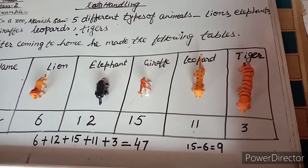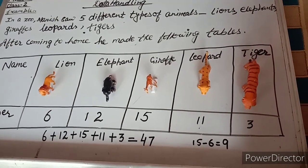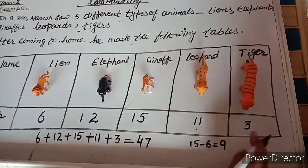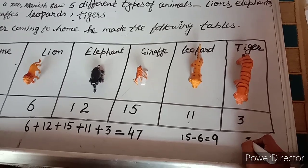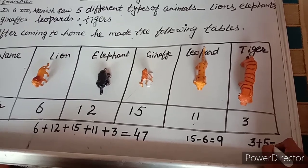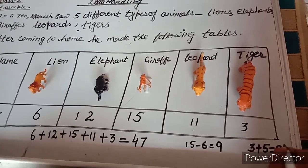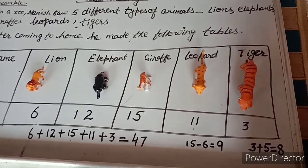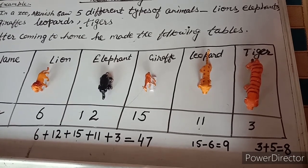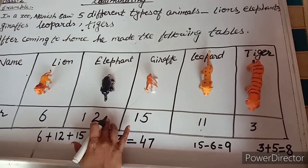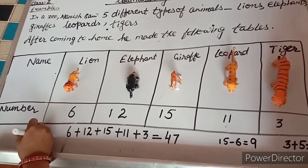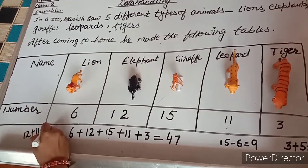If 5 tigers are added to the zoo, calculate the number of tigers. There are 3 tigers, and we add 5, so 3 plus 5 equals 8 tigers. How many elephants and leopards are there altogether? 12 elephants and 11 leopards — 12 plus 11 equals 23.